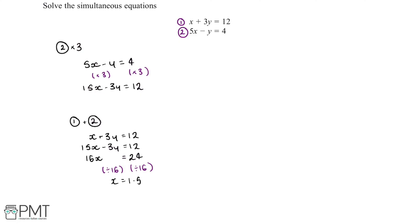If we substitute x equals 1.5 into equation 1, this gives us 1.5 plus 3y equals 12. And if we minus 1.5 from both sides,